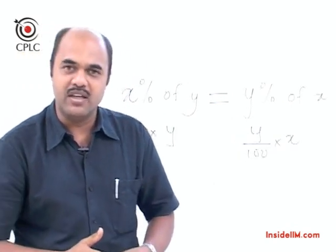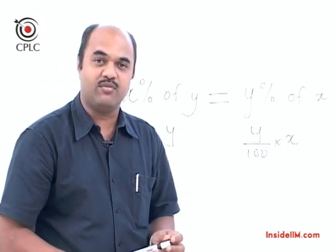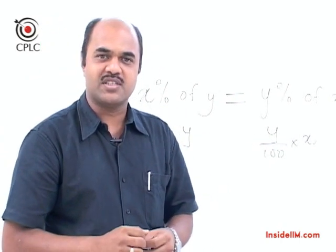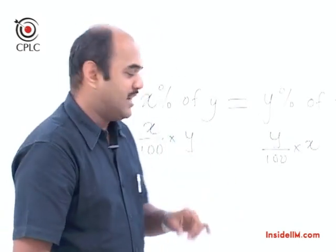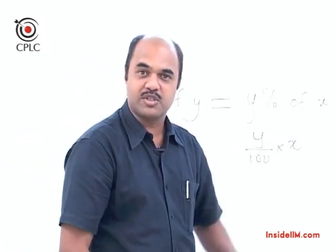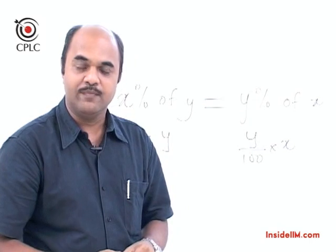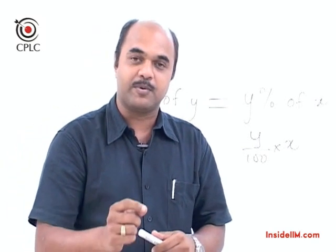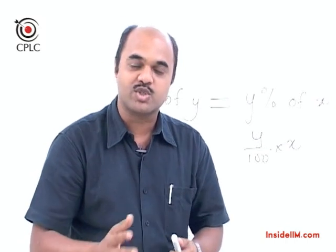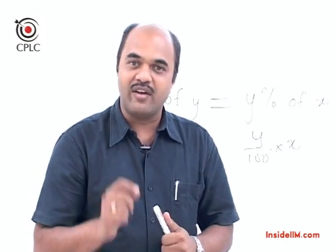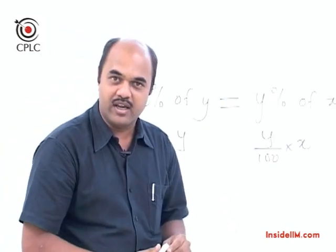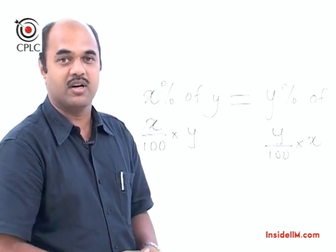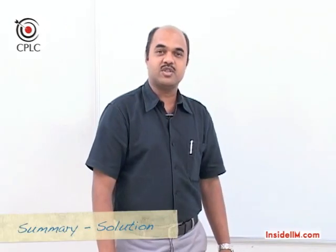If we can identify this equivalence, we can speed up our calculations. For example, if we want to find 37.5 percent of 50, we know x percent of y is the same as y percent of x. So 37.5 percent of 50 is the same as 50 percent of 37.5, which sounds much simpler to calculate. Wherever it is possible to interchange x and y to make the calculation simpler, we should do so.